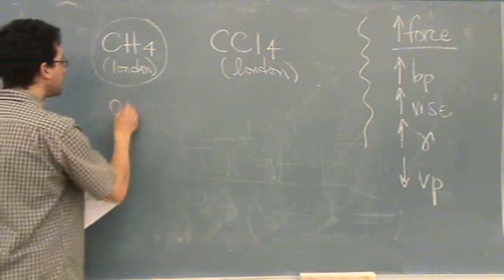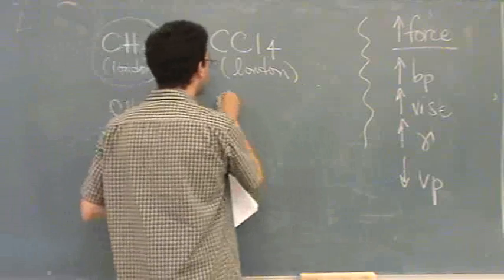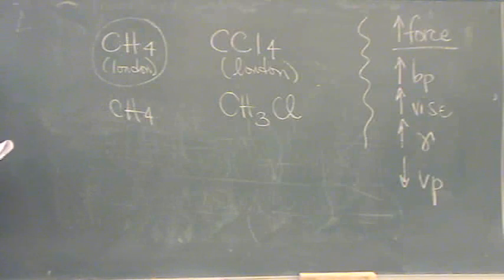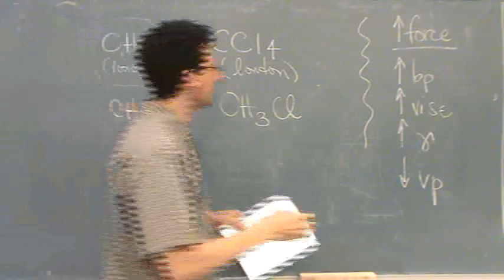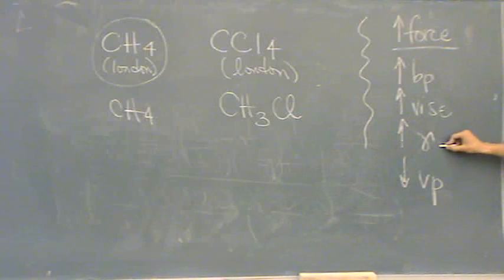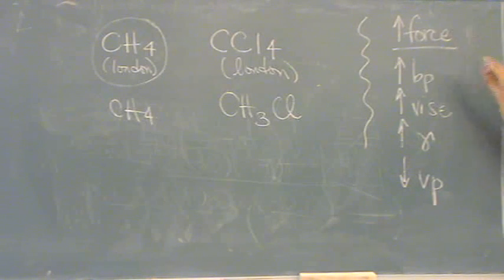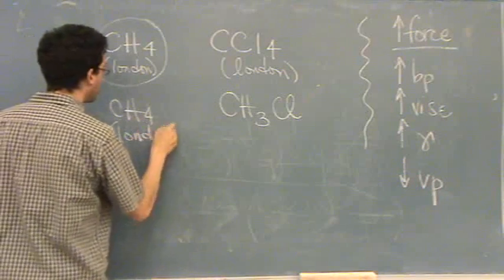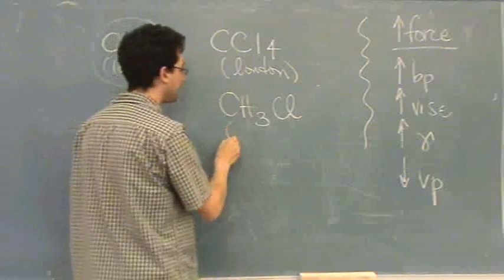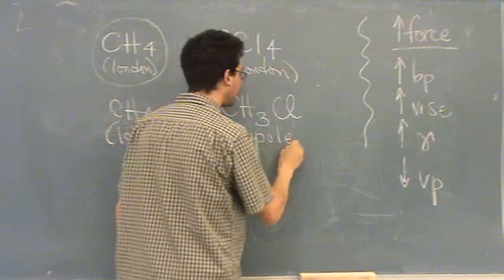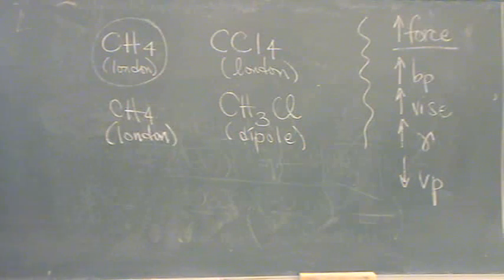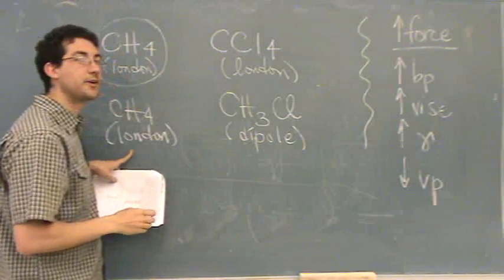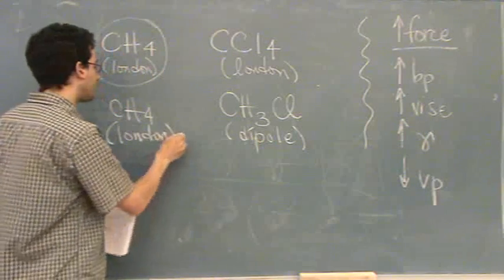Second one is between CH4 and CH3CL. In this case, we want the lower surface tension. Lower surface tension means lower force again. The first one we determined is London, because there's no H-bond, there's no dipole. What's the second one? It's a dipole. There's no H-bond, but it's asymmetric. It has a dipole with electronegativity difference. So now this one's going to have the higher force. We're looking for the one with the lower force to get the lower surface tension, so that's CH4.